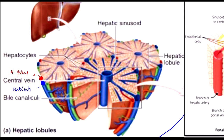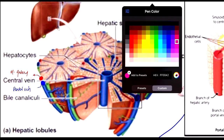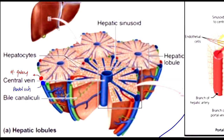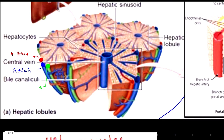Another important structure to mention is the duct. You can see a green structure here, and its name is the bile duct. The bile duct carries bile, which is produced by hepatocytes.